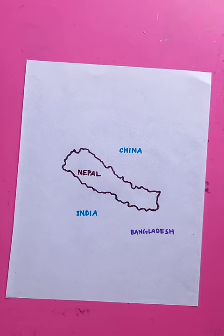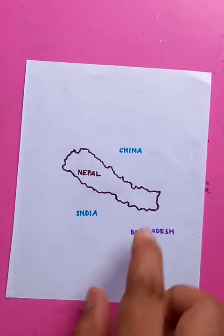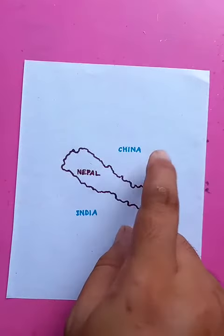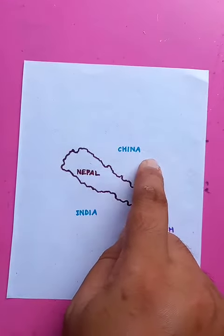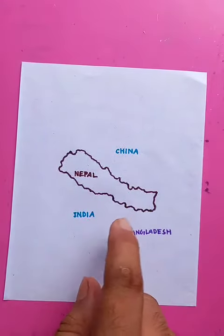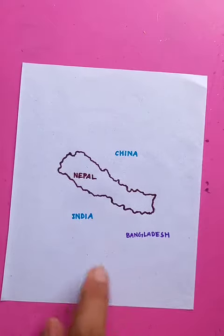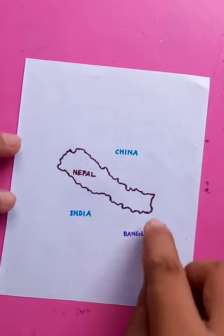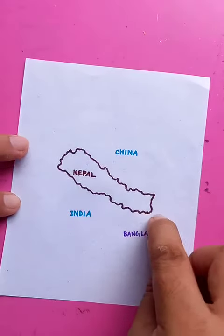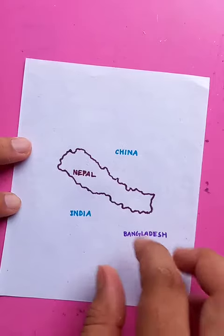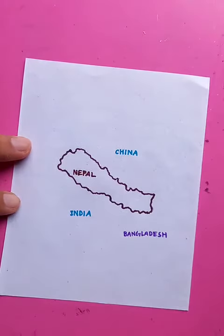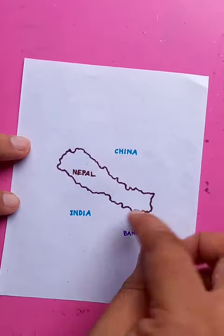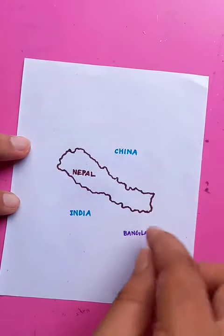Visual impact always has a great role. Nepal has borders with China on the northern side, and you can see India on the south side. Bangladesh is a little further away — there's a corridor of India in between — so Bangladesh is a close neighbor but not directly adjacent.